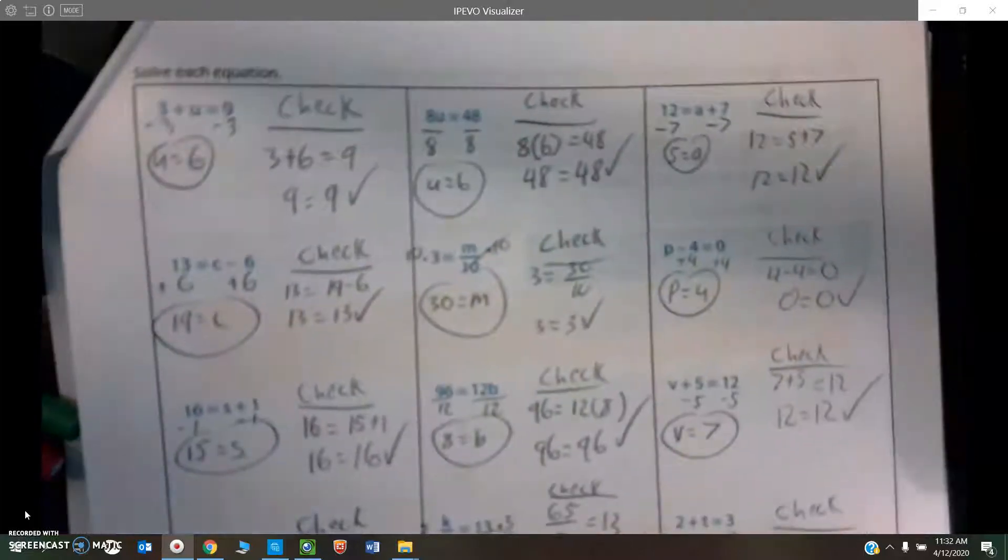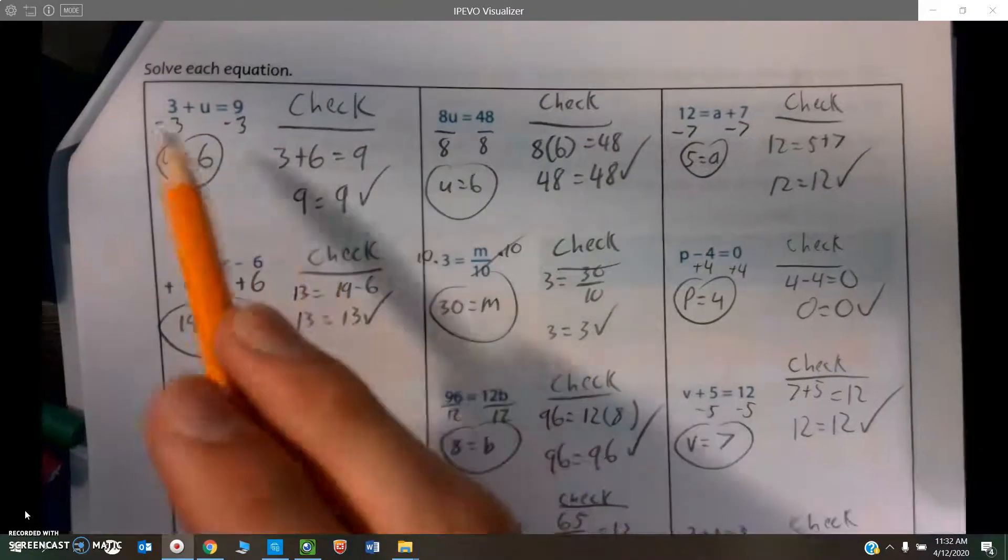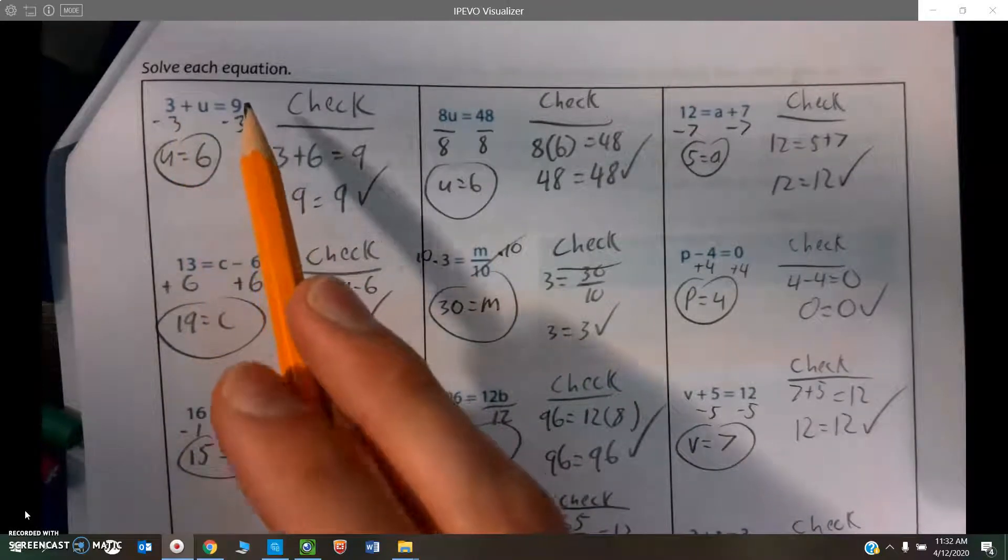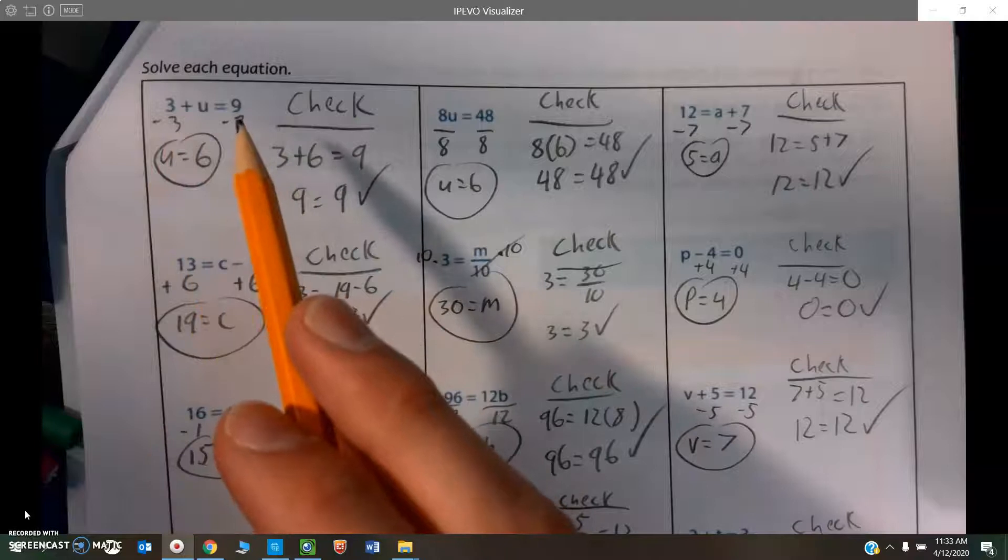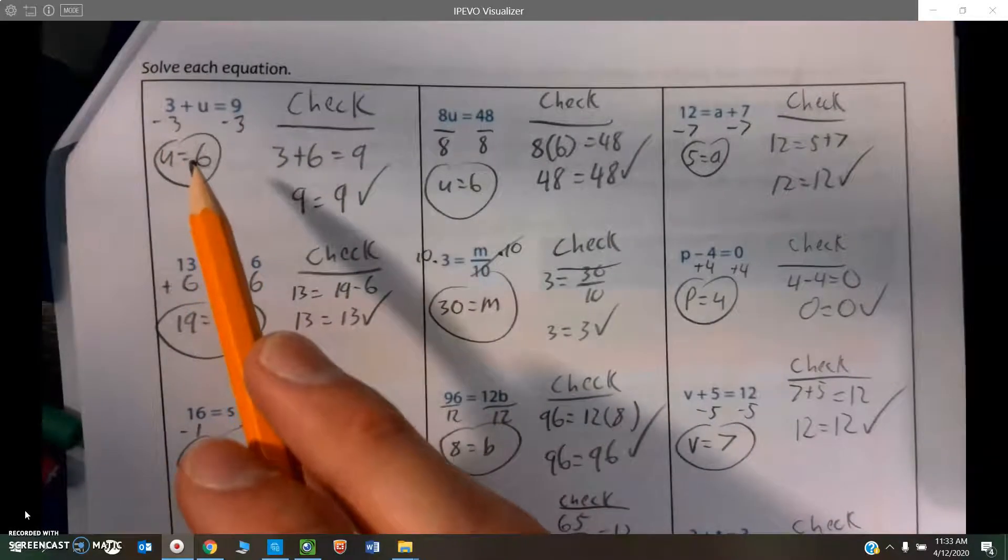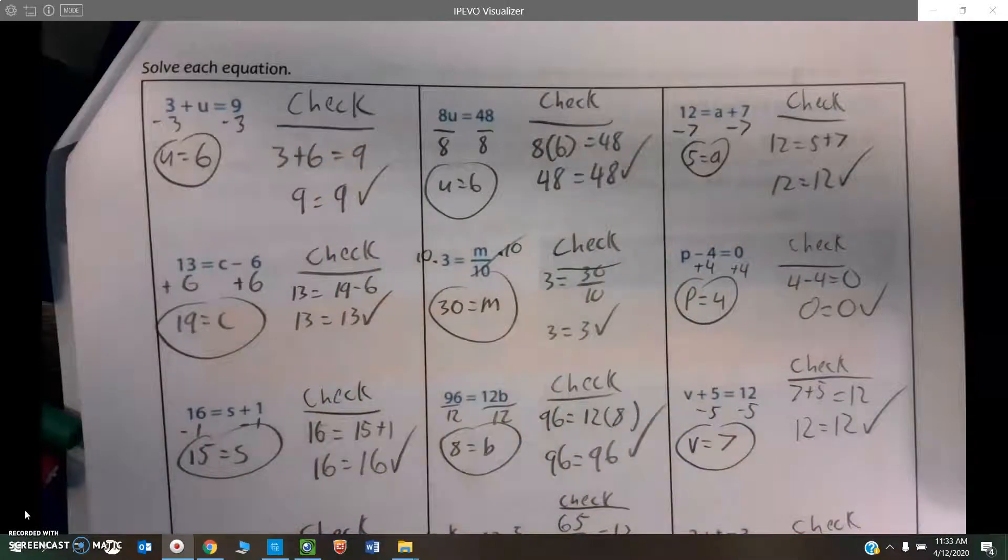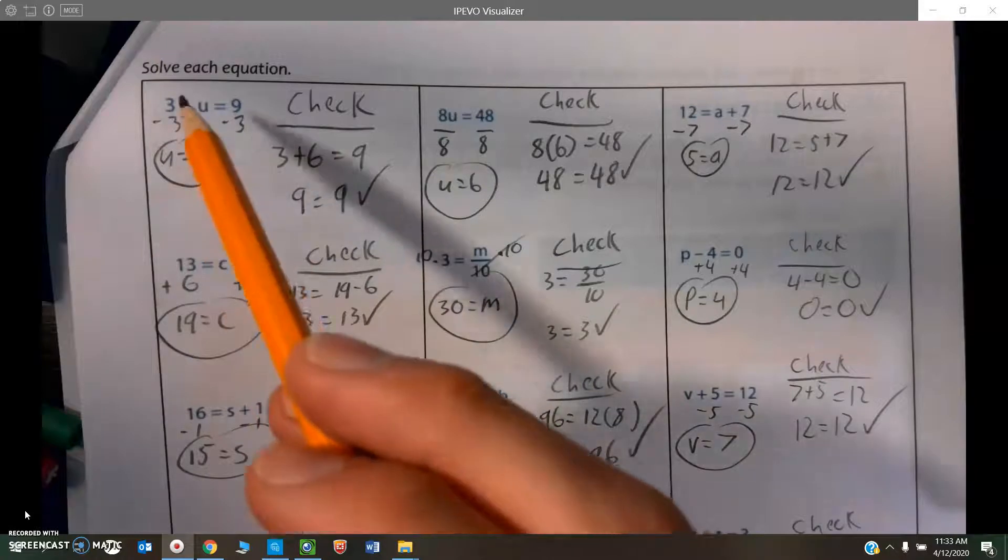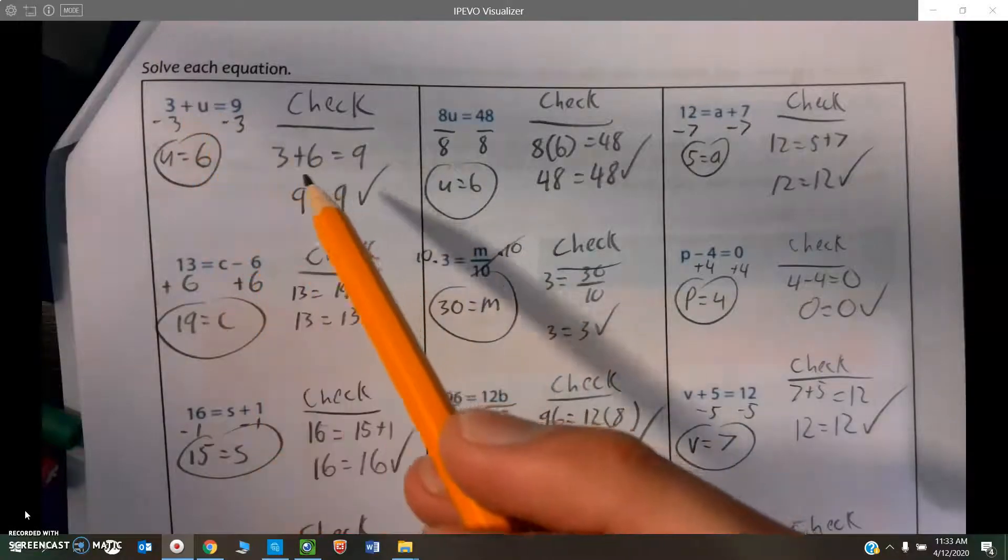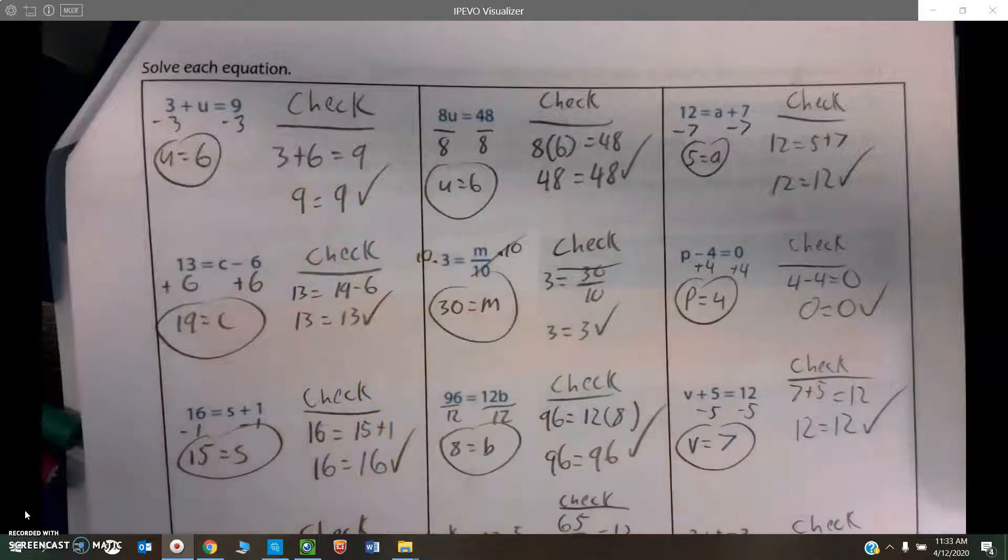And finally, once again, solving for variables using inverse operations. So here, 3 plus what is 9? If I don't know what I have to add 3 to, then I will subtract through the inverse operation. And I get u equals 6. And then for every single problem, you can see that I use substitution to check my work. So I got u equals 6. Well, then I should be able to put 6 into my equation, and it should make a true statement. And indeed, 3 plus 6 is 9.